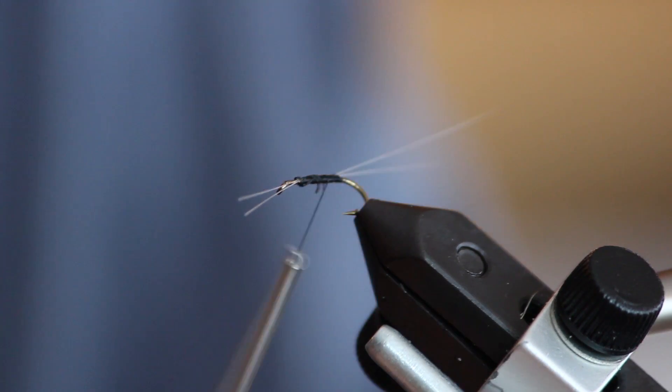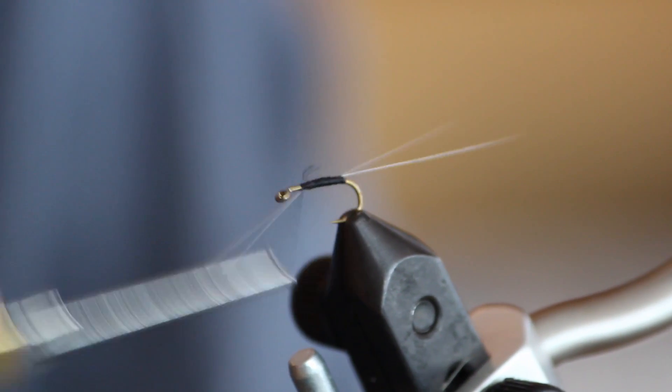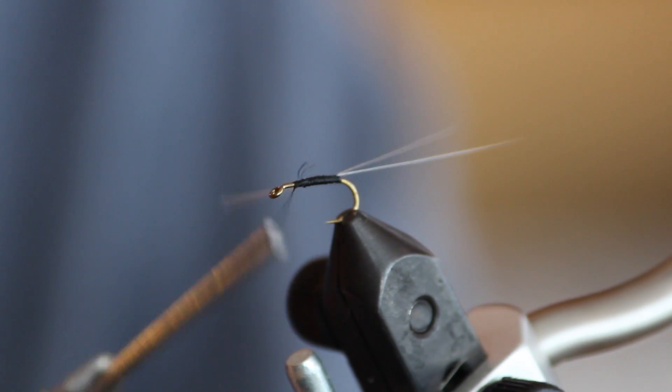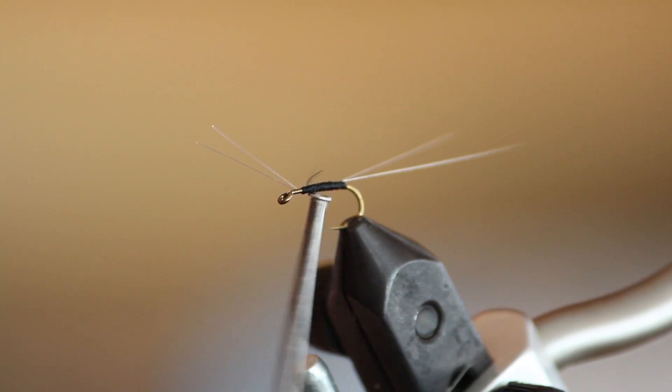Once secure, cut off your tag end and wrap the area so no thread fibers are hanging out. Make a small head just behind the eye of the hook and then cut off your microfibbet stubs.